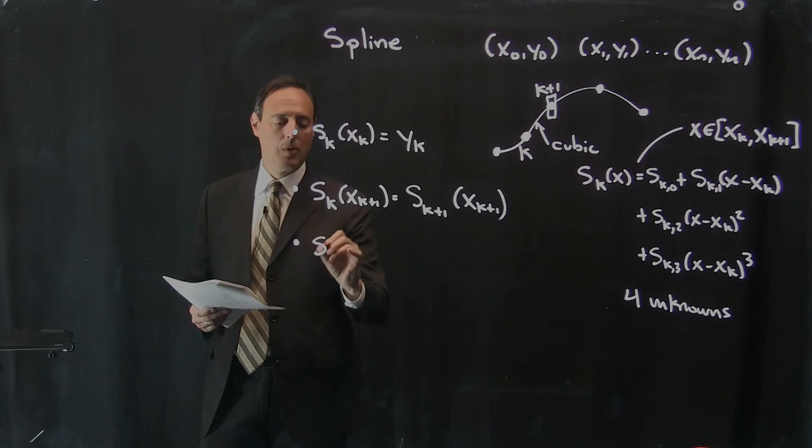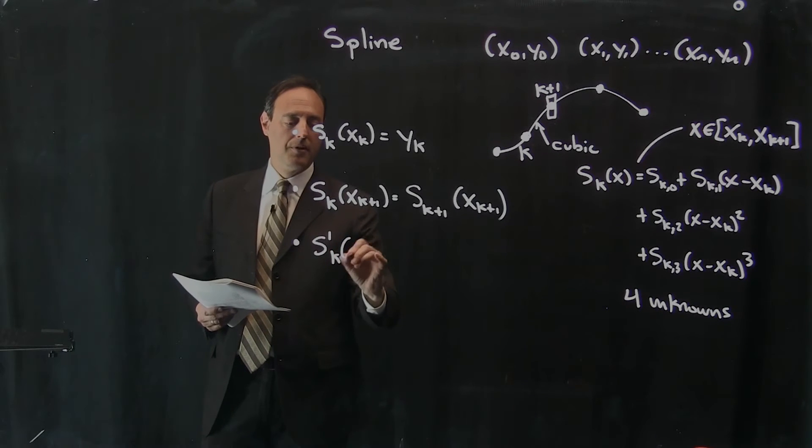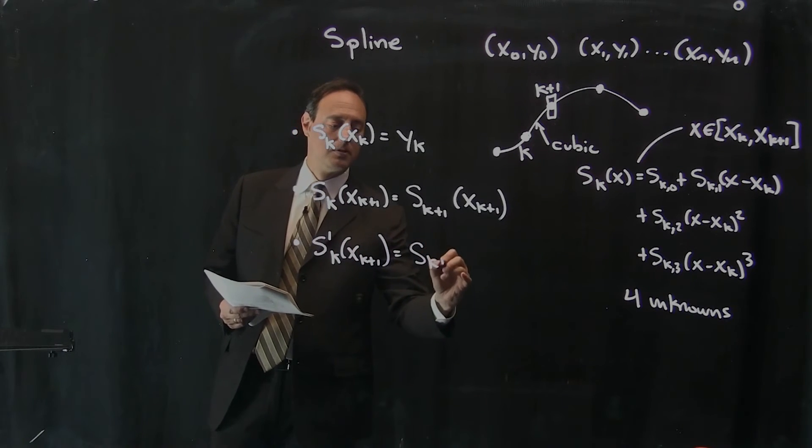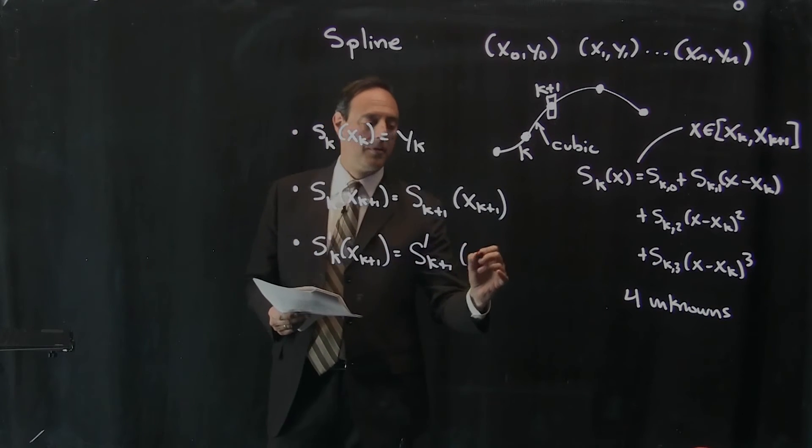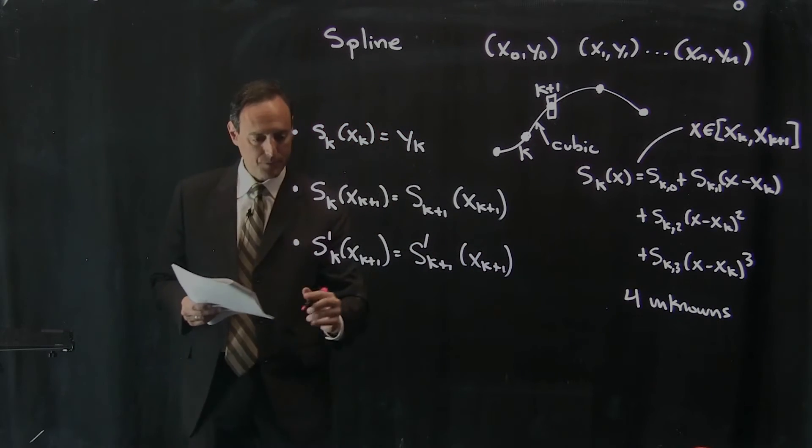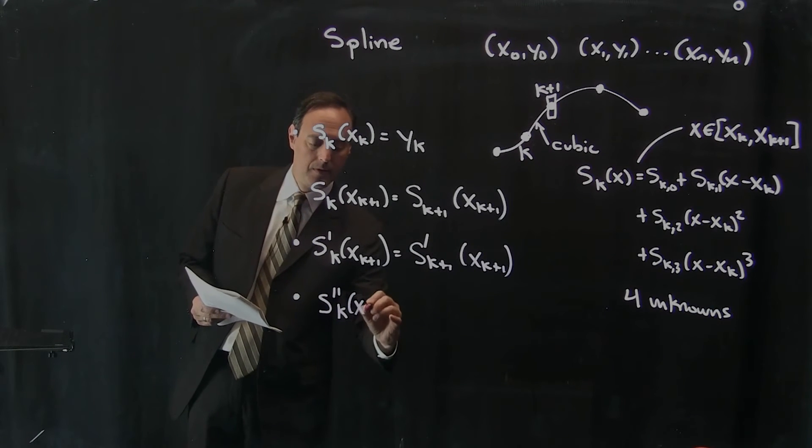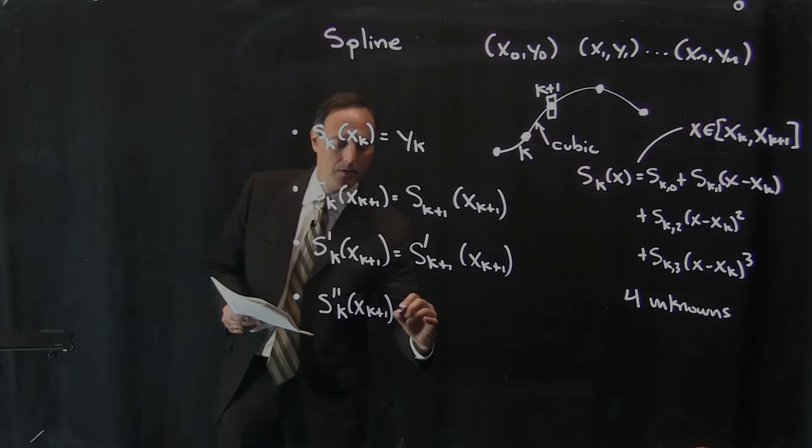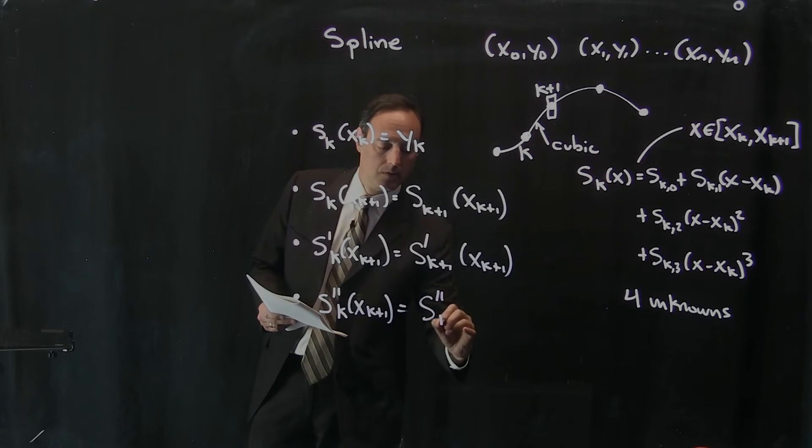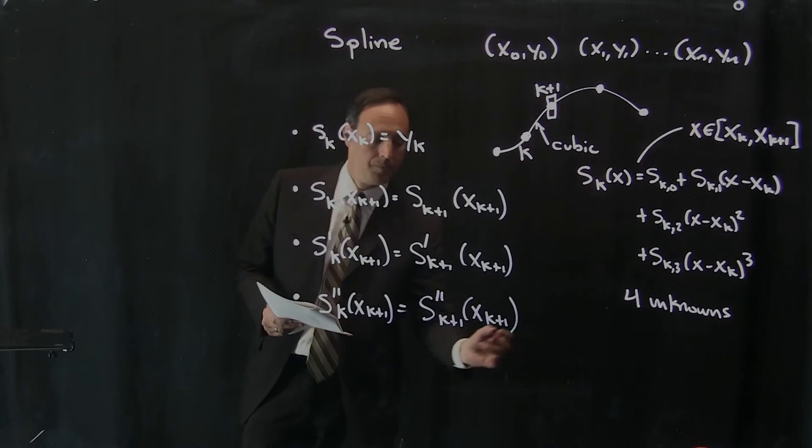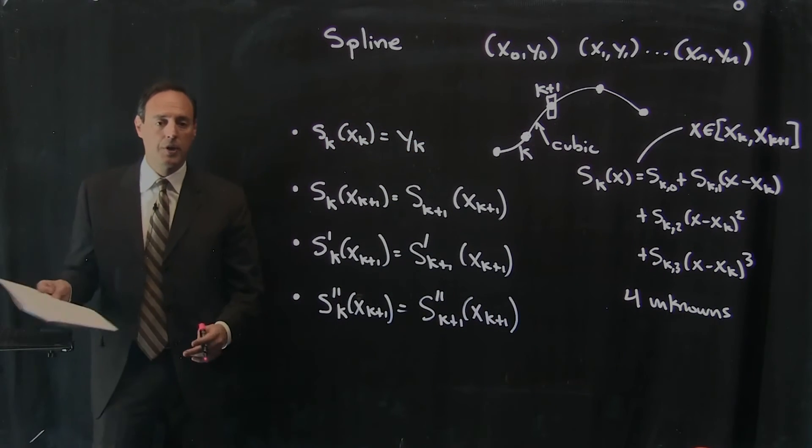So how would we write that? Well, there's the derivative. Again, at that point, it has to match the derivative of the next point. Also, second derivative. Okay, so those are our constraints.